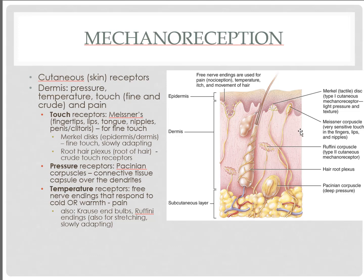We also see receptors in our root hair plexus — nerve endings grouped together within the root of the hair itself. Any movement of the hair from touch will be picked up by the plexus, sending information about fine levels of touch. Pressure receptors such as our Pacinian corpuscles are typically deeper in the dermis and receive information only with deeper levels of touch. Activation of Pacinian corpuscles, along with Meissner and Merkel discs at higher degrees of touch, allows us to tell the degree of pressure being placed on the skin.